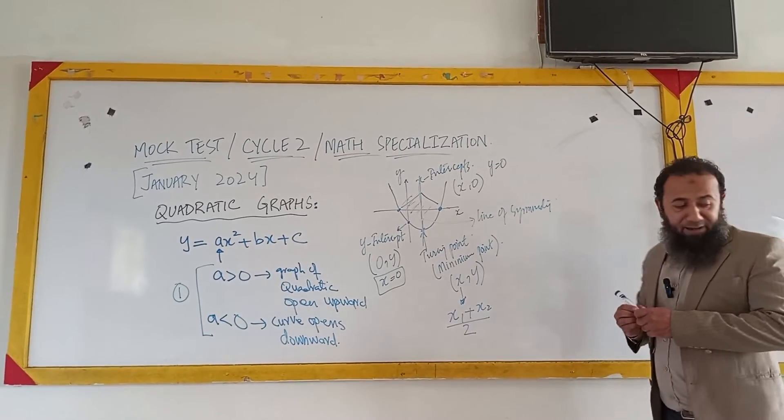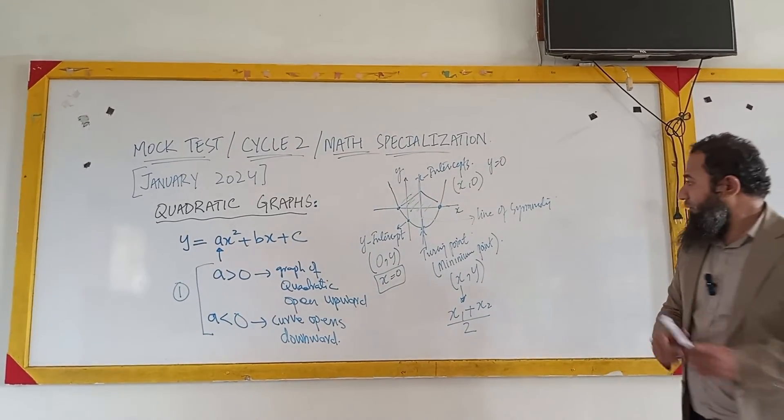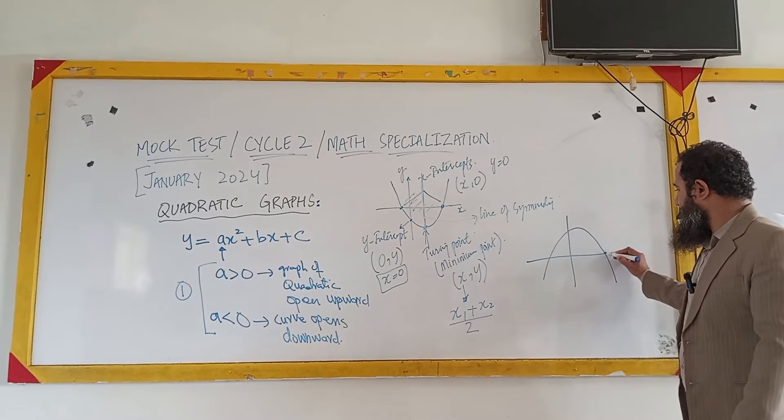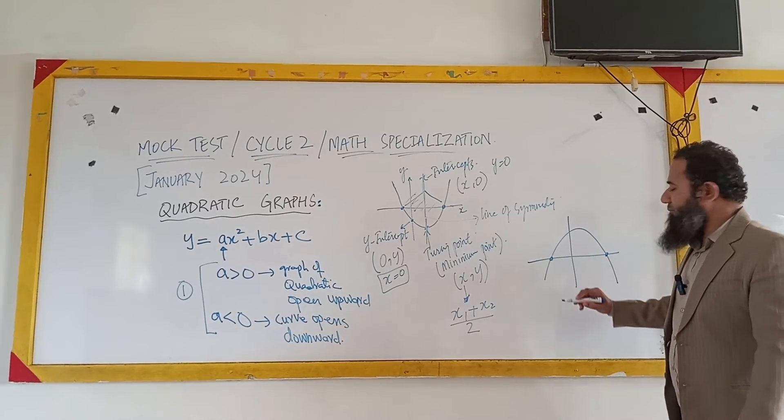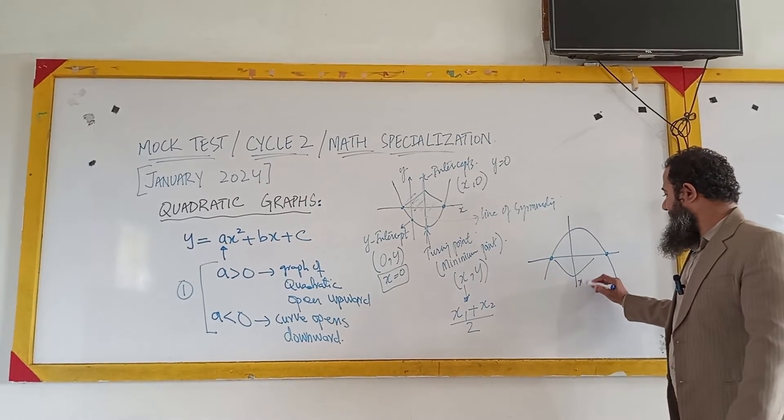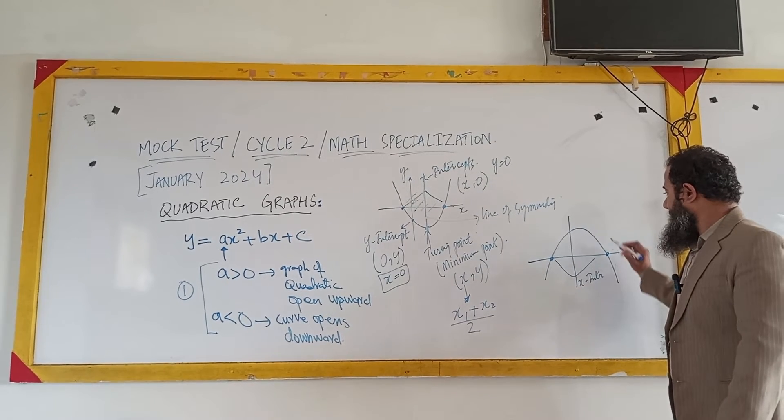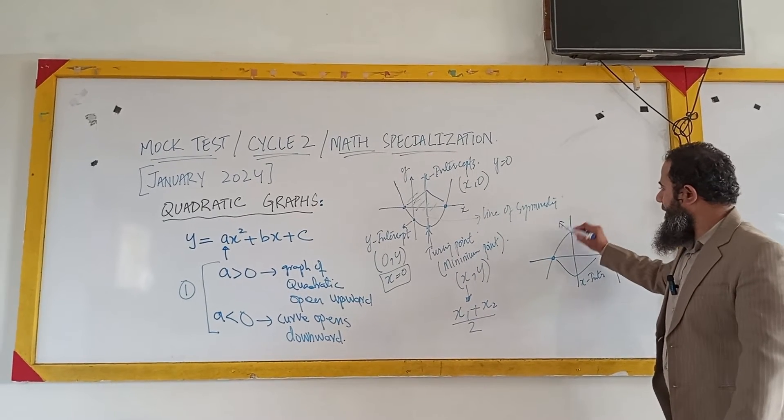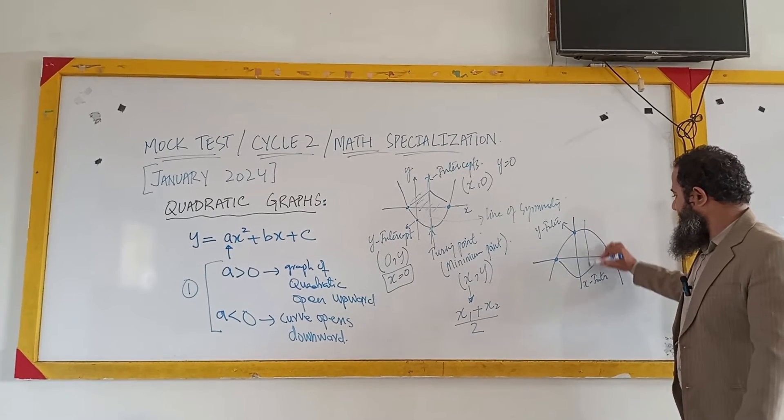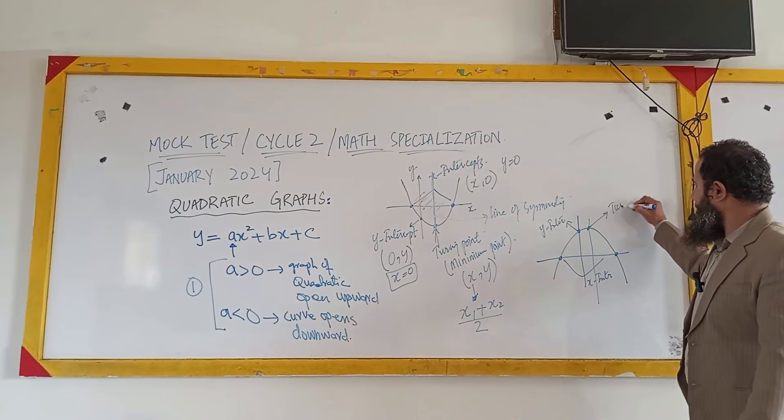Now we have another formation of the curve that is called the downward curve. These are the same points called the x-intercepts, and this point is called the y-intercept.